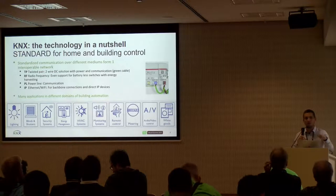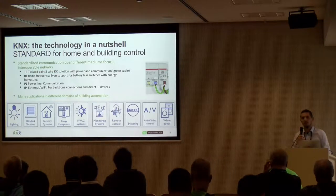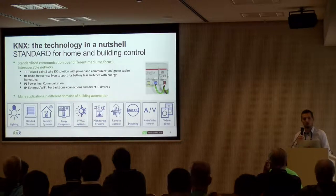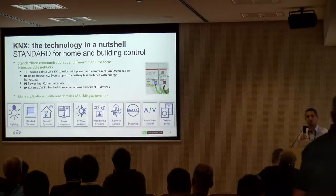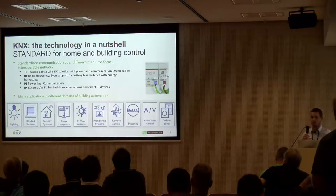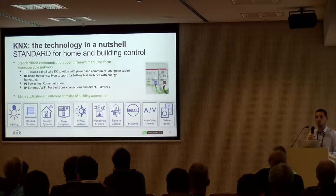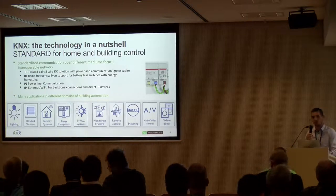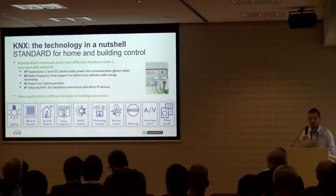The twisted pair bus runs on 30 volts DC power where communication goes over the power lines. You can make all kinds of network structures — you don't need a strict ring or strict hierarchy; you just tap the power at any point and communication follows. There is also a radio frequency solution, very handy for renovating buildings, a power line solution doing communication over high-voltage lines, and an IP solution to use the KNX protocol directly from the IP side.